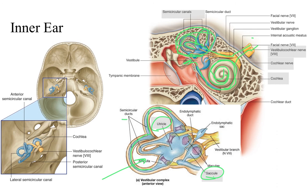Finally, the facial nerve enters the internal acoustic meatus — remember that the facial nerve also travels into the internal acoustic meatus, passing by all of these organs, and then comes out underneath the external acoustic meatus.